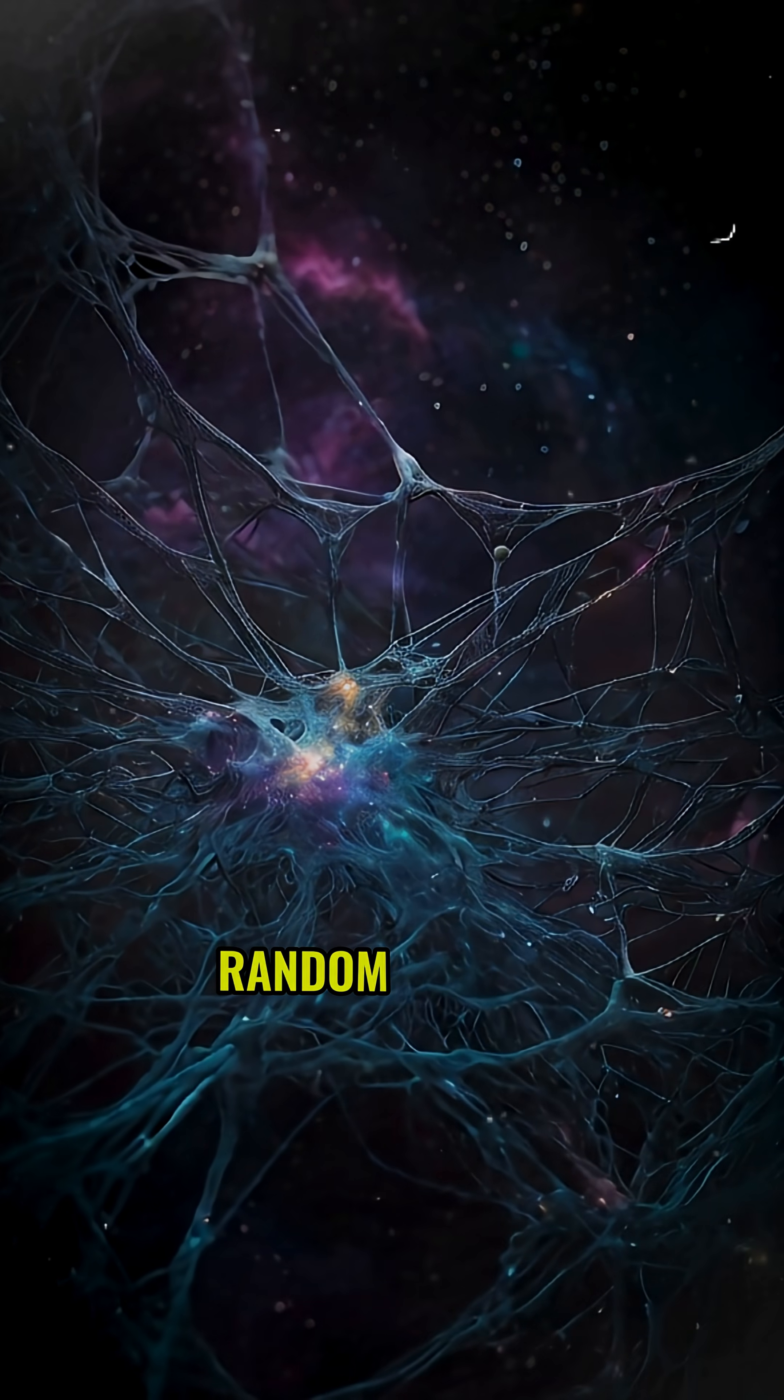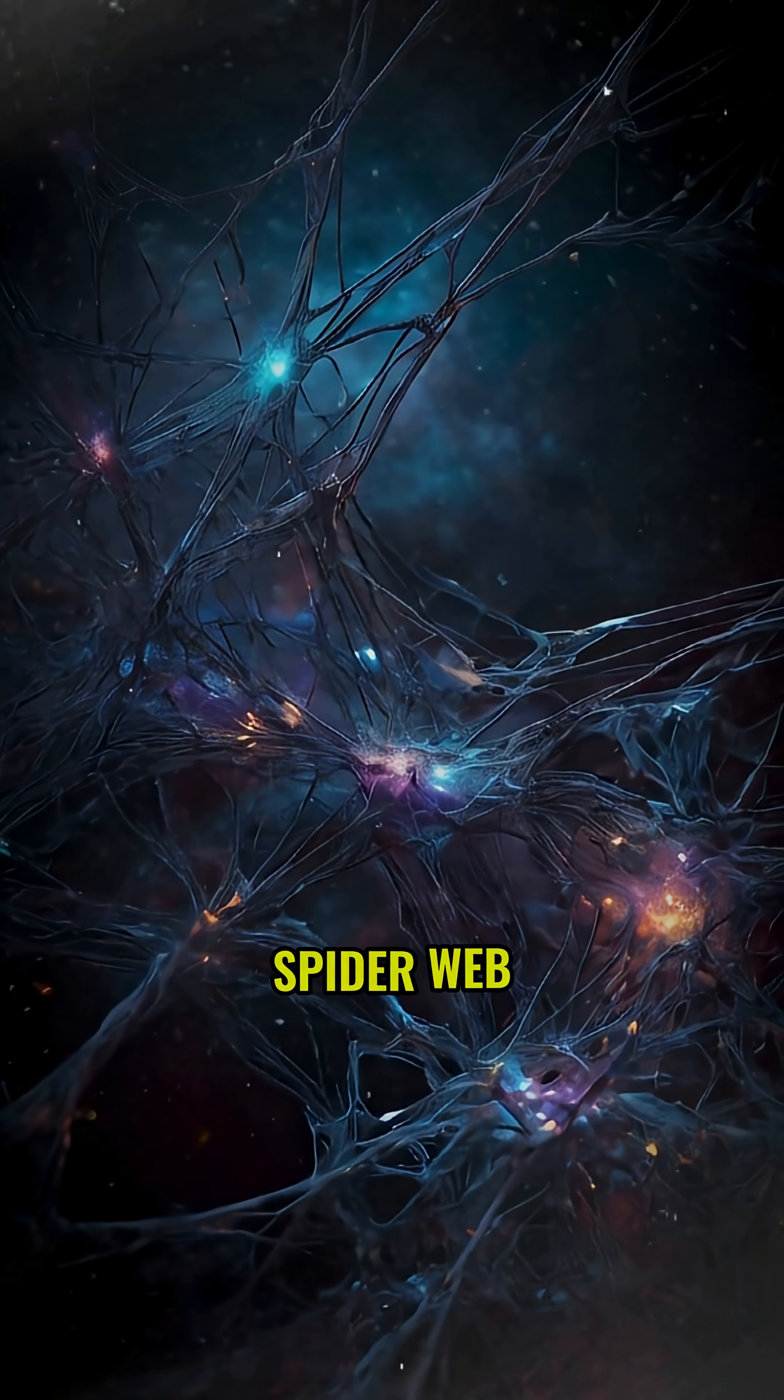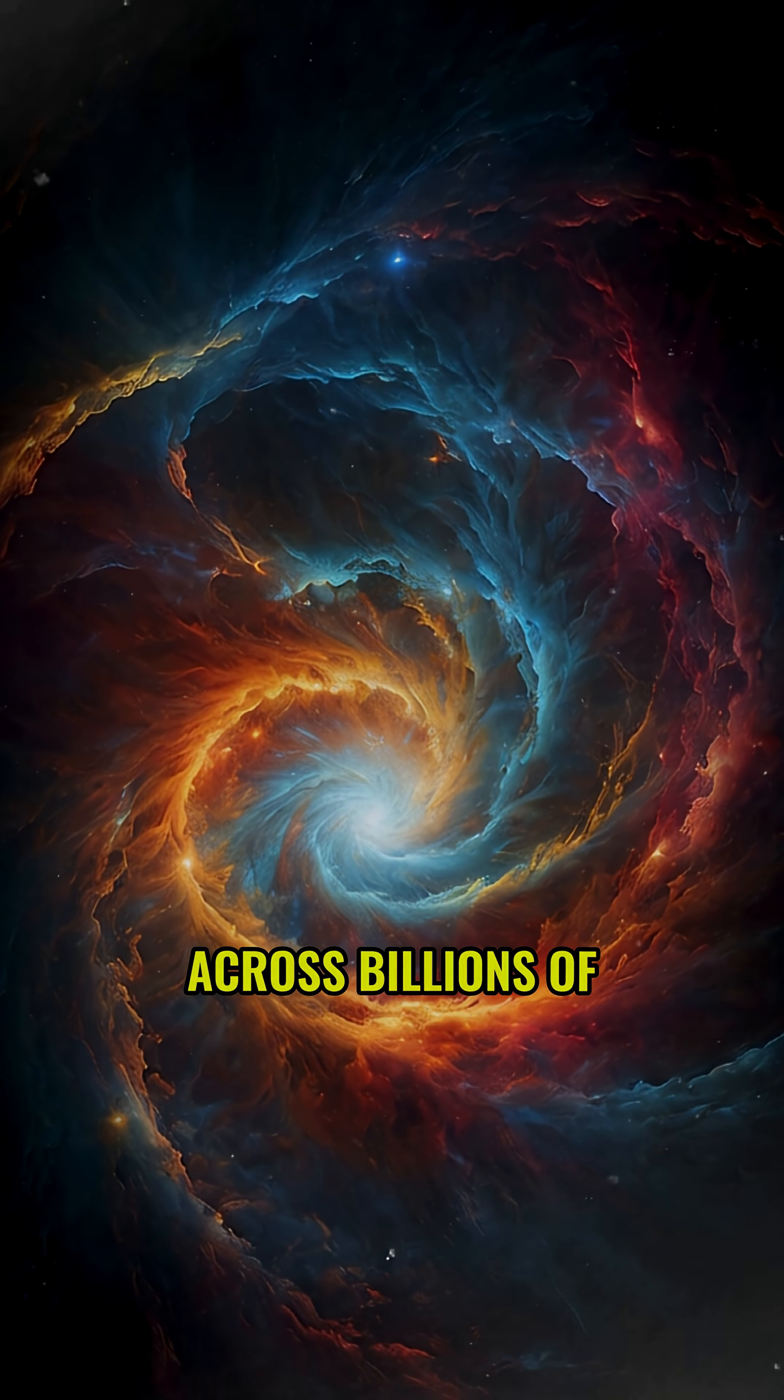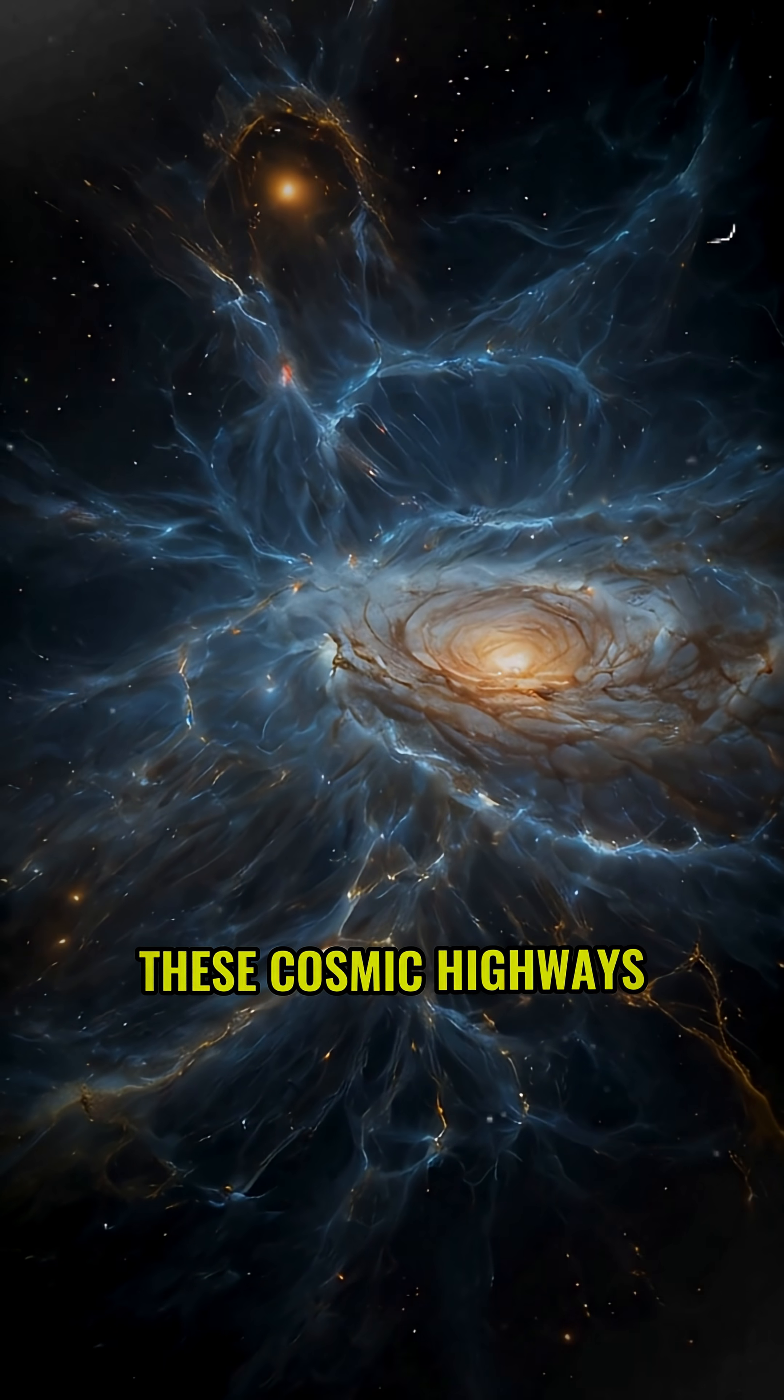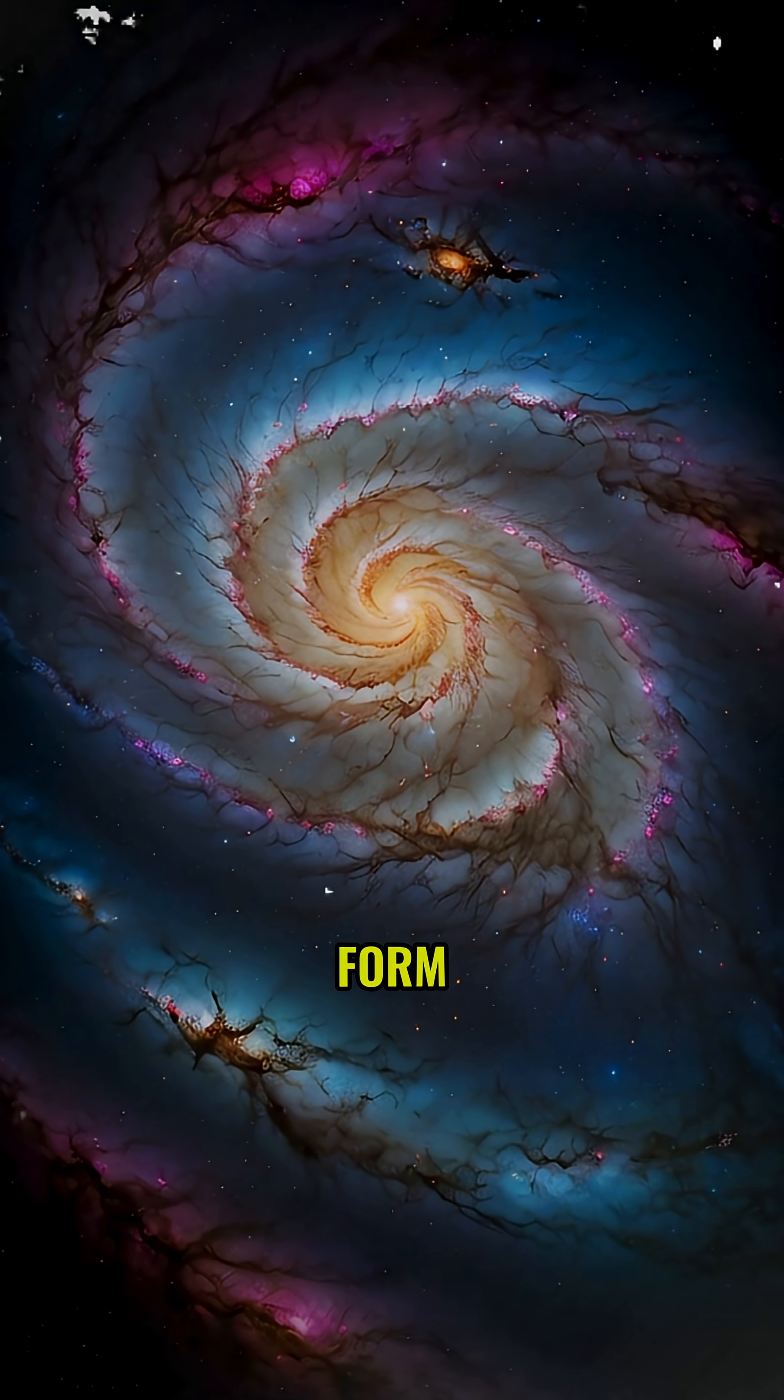The universe isn't random chaos. It's actually organized like a giant spider web. Invisible filaments of dark matter stretch across billions of light years, connecting every galaxy in existence. These cosmic highways guide matter through space, determining where new stars and galaxies form.